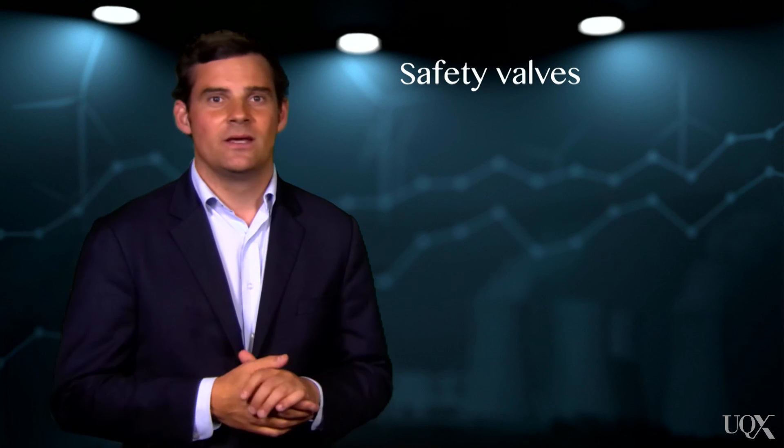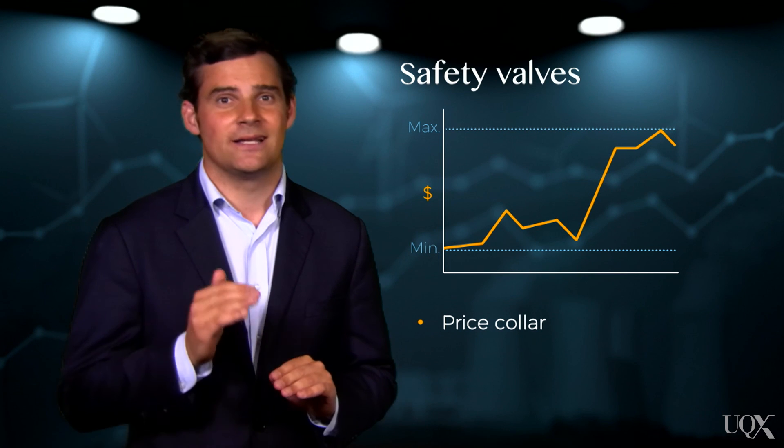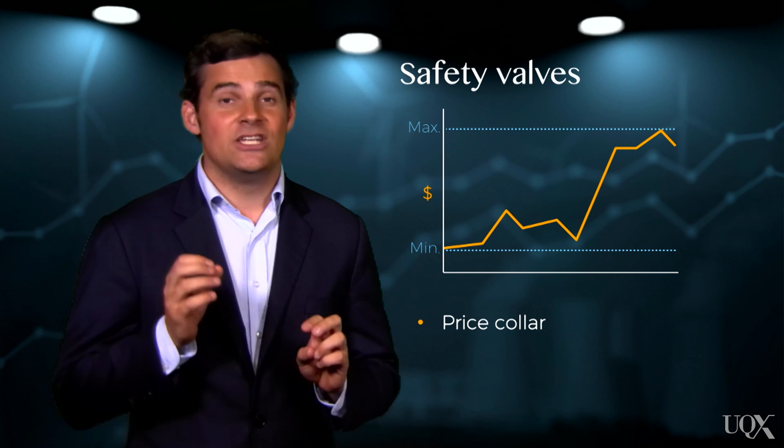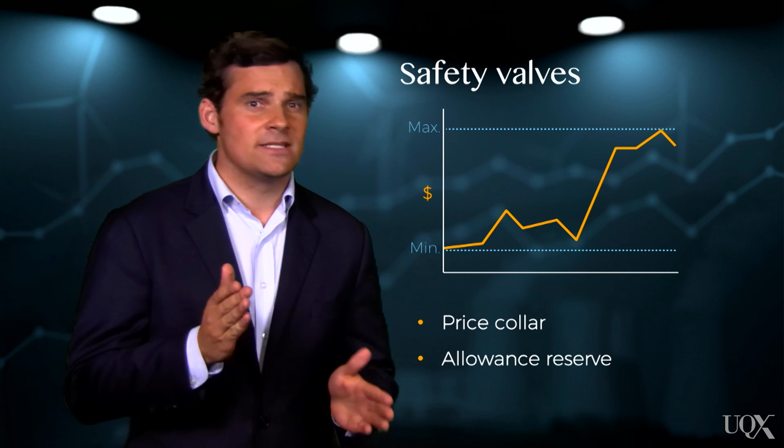One major concern for emissions trading schemes is the risk of volatile market prices, such as those observed in the early years of the EU ETS. Volatile market prices are difficult for companies to manage and create headaches for government in forecasting auction revenue. To increase price predictability, governments can use so-called safety valves. These include setting a price collar by specifying a minimum and maximum price that allowances can be bid for at auction. Another method may involve releasing additional allowances from a government-held reserve to reduce the market price if the carbon price increases too much.